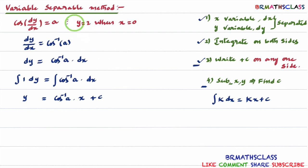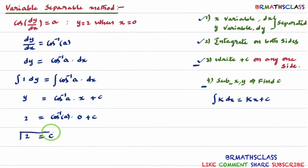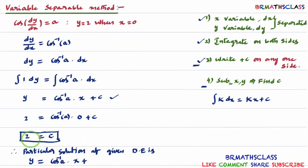To find the particular solution, substitute x equal to 0 and y equal to 2 into the general solution: 2 equal to cos⁻¹(a) into 0 plus c, which gives 2 equal to 0 plus c, so c equal to 2. Once we have the value of c, substitute it back into the general solution. Therefore, the particular solution of the given differential equation is: y equal to cos⁻¹(a) into x plus 2.